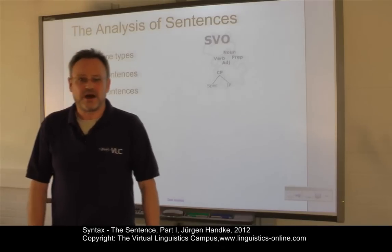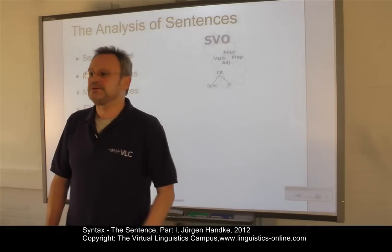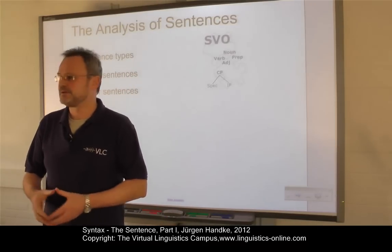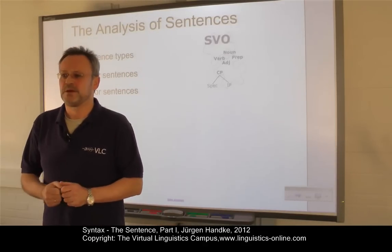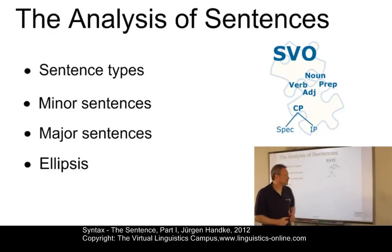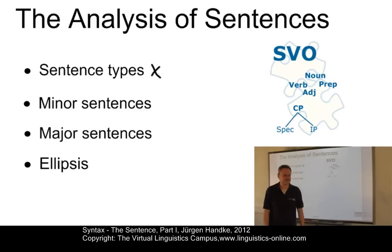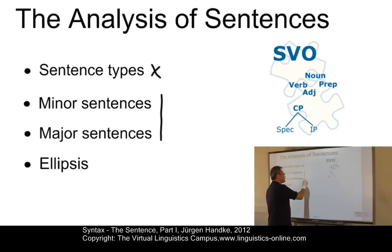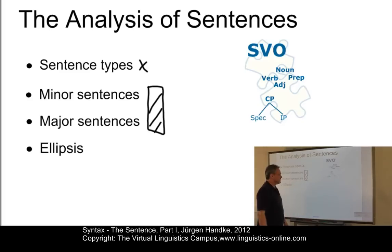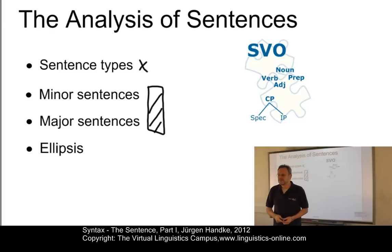This unit is about the highest ranking unit in syntax: the sentence. We will proceed according to the following steps. We will first analyze sentence types and find out what types of sentences there are. Then we will draw a distinction between major and minor sentences. And finally, we will deal with a phenomenon called ellipsis.